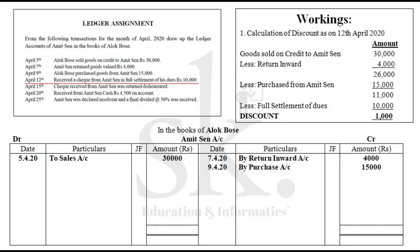On 12th April, received a check from Amit Sen in full settlement of his dues of Rs 10,000. A payment has been made for Rs 10,000, but we need to calculate the actual amount required to be paid, because it is clearly mentioned as full settlement of his dues of Rs 10,000. We need to find out the actual amount due, so we require to do a working as on 12th April.